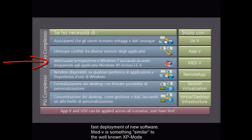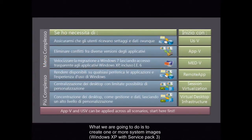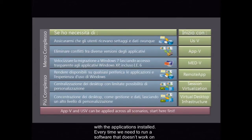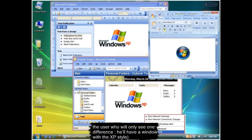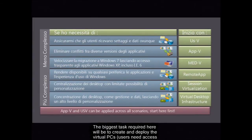MedV is something similar to the well-known XP mode. What we are going to do is create one or more system images — Windows XP with Service Pack 3 — with the applications installed. Every time we need to run software that doesn't work on Windows 7, a virtual machine with Windows XP will start. That's transparent to the user, who will only see one difference: a window with the XP style. The biggest task required here will be to create and deploy the virtual PCs. Users need access to the VHD files of the XP installation.